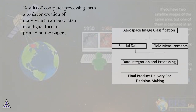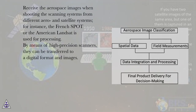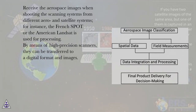Results of computer processing form a basis for creation of maps which can be written in digital form or printed on paper. Aerospace images are received when shooting with scanning systems from different aero and satellite systems. For instance, the French SPOT or the American Landsat is used for processing.